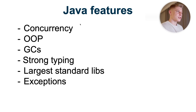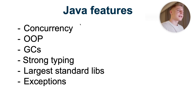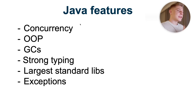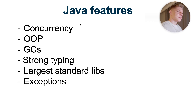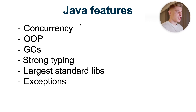Java features look as follows. Java supports concurrency. Java is an object-oriented programming language — it has inheritance, composition, encapsulation, and polymorphism. Java has a bunch of garbage collectors. Java is a strongly typed language. Since Java was developed in 1996, it has the largest standard library, with much more capabilities compared to Golang, especially in desktop development. Java has Swing and JavaFX for that.